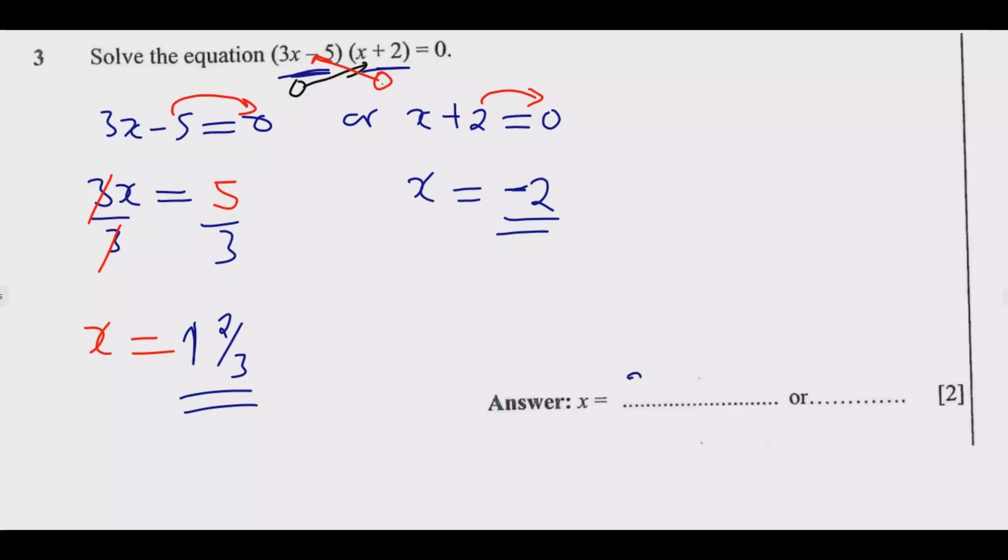So x equals negative 2 as my first answer, or x equals 1 2/3. Once you do that, you get the two marks just as easy as that. If you want, you can prove by just substituting any of these answers to ensure that the answers are correct.